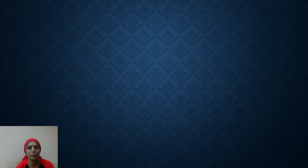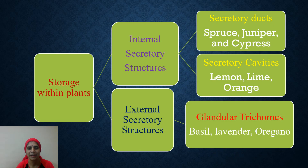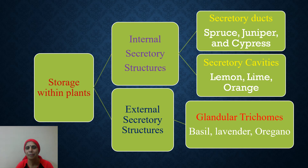We know their composition, characteristics, the families and plant parts. Now, we would like to know where they are stored in plants. Storage takes place in external secretory structures — for example, glandular trichomes in basil, lavender, rosemary, and Astra — as well as in internal secretory structures such as secretory ducts like spruce, juniper, cypress, and most gymnosperms, and in secretory cavities like lemon, lime, and orange.